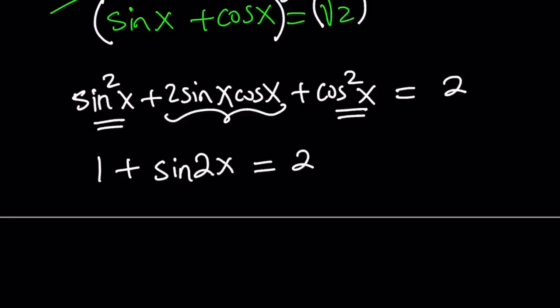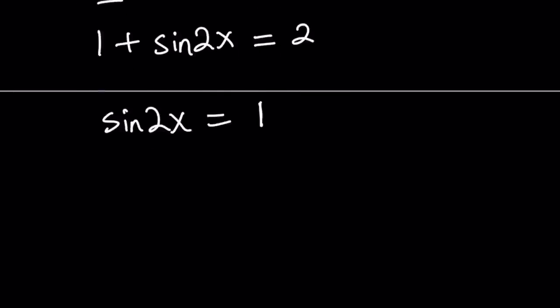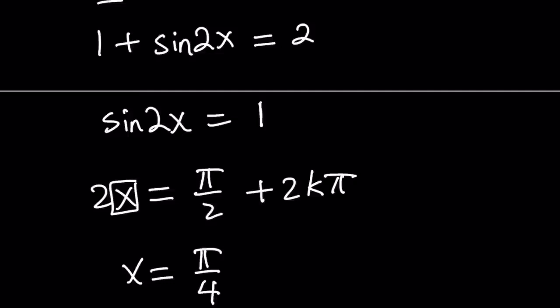Subtract 1 you get sine 2x equals 1. The sine of which angle is 1? The answer is pi over 2. So let's go ahead and replace 2x with pi over 2 and then we have to add multiples of 2 pi or even multiples of pi. If you want you can use a different variable, it's just a dummy variable. Now because we're trying to solve for x we'll divide both sides by 2, so x equals pi over 4 plus k pi.